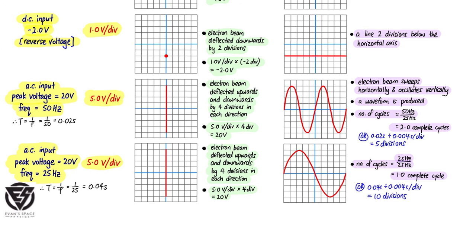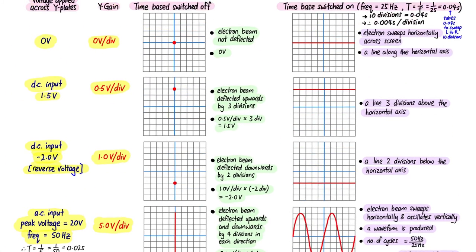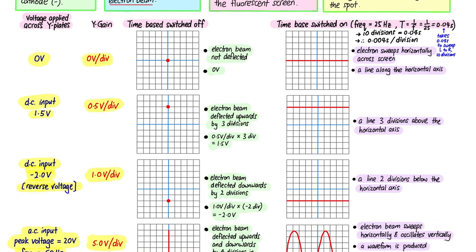So one complete wave occupies 10 divisions, and only one complete wave is seen on the screen. I hope with this video you'll be able to understand how the various voltage sources applied to the y-blades and the different settings of y-gain and time base all affect the display of the waveform on the screen.